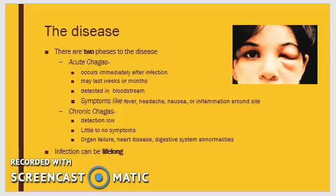The symptoms of an acute phase are highly variable and may include fever, headache, anorexia, joint pain, weakness, nausea, vomiting, diarrhea, and generalized or localized edema. The chronic phase is typically represented by organ failure, usually of the heart or digestive system.